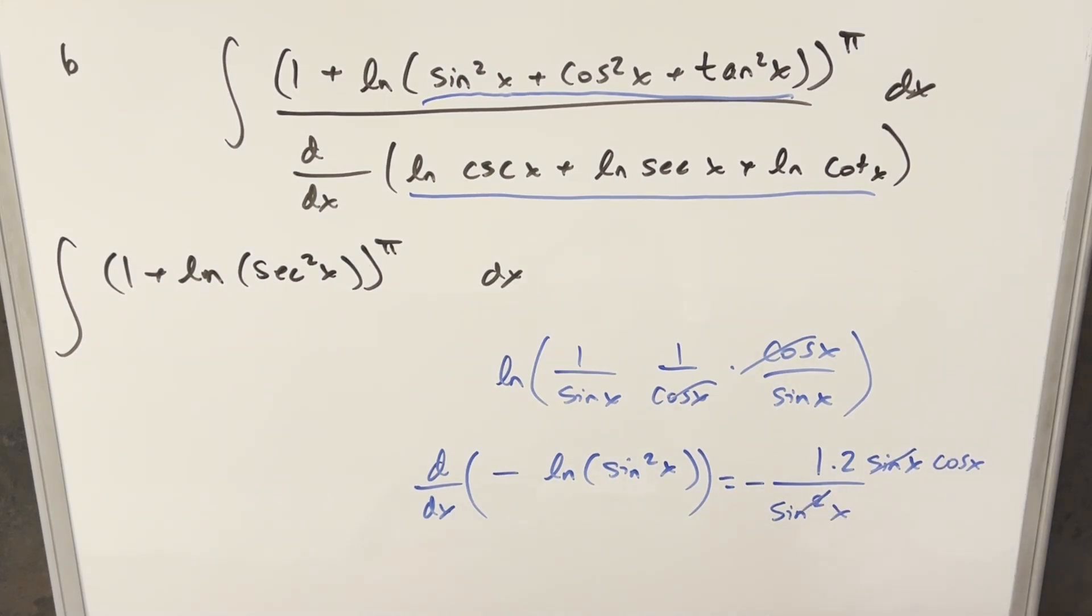Cancel sine with one of these signs. Then we just have, and then what we can do to clean this all up, I can write this as bringing the 2 out front, minus 2 cosine over sine is just cotangent x. And so let's just take this minus 2 cotangent x, put it back in the integral and continue from there.